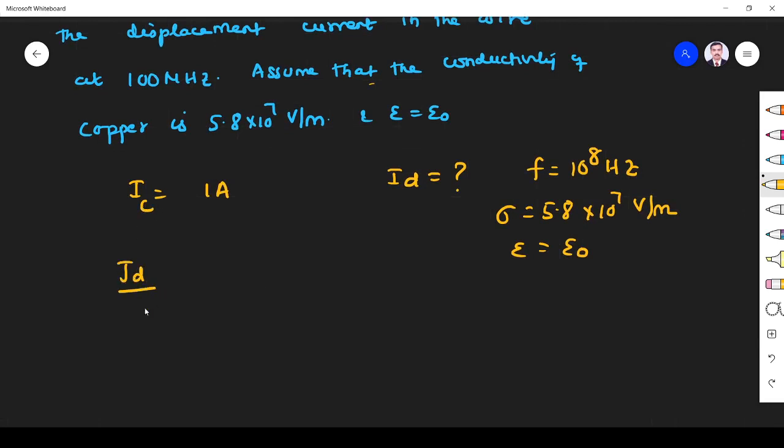The ratio is given by jd/jc = ωε/σ. So jd/jc, where jd is displacement current density and jc is conduction current density. What I want is displacement current.